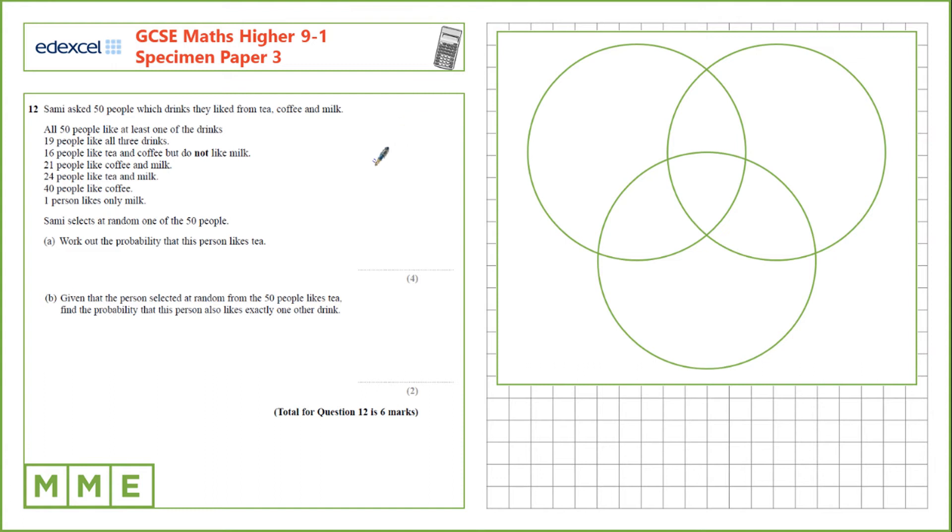Question 12. Sammy asked 50 people which drinks they liked from tea, coffee and milk. We have the responses here. We select at random one of the 50 people. Work out the probability that this person wants tea.